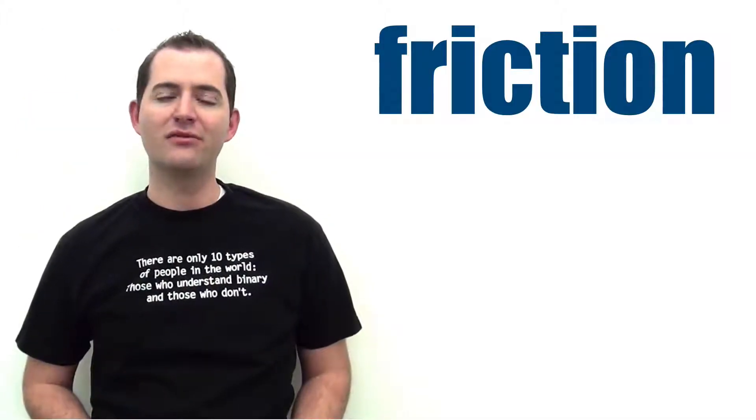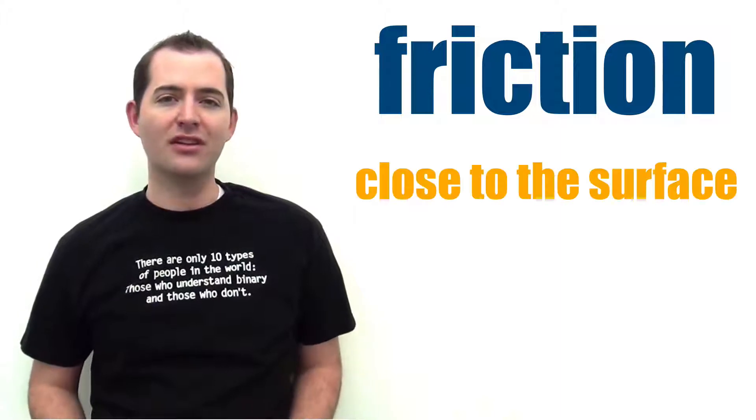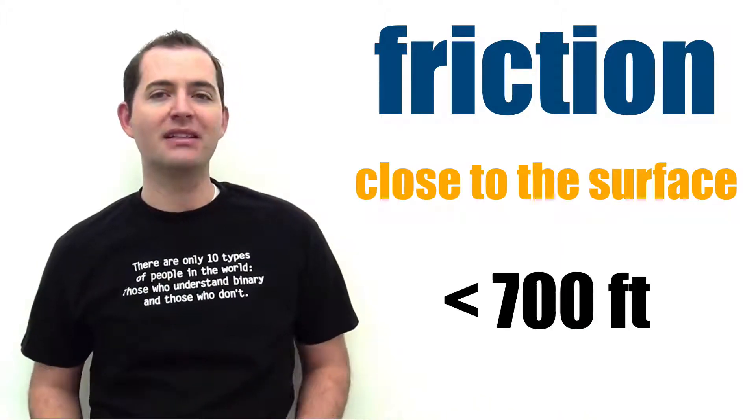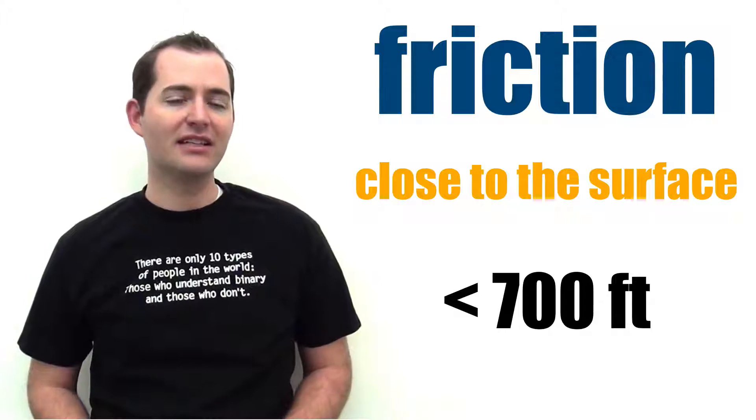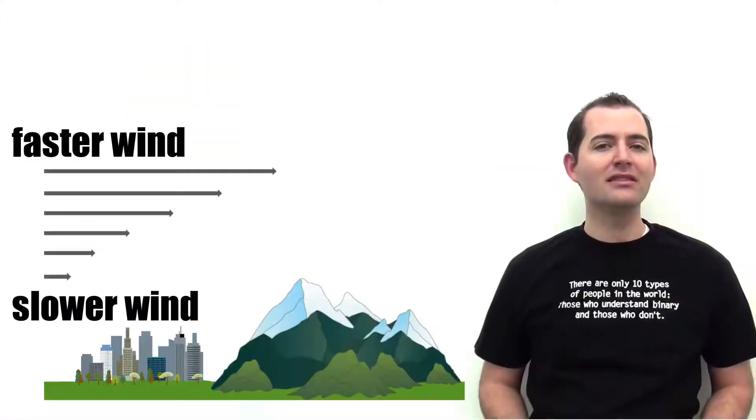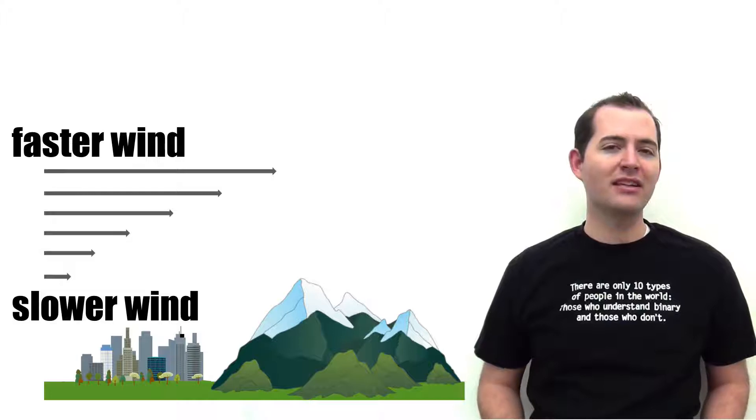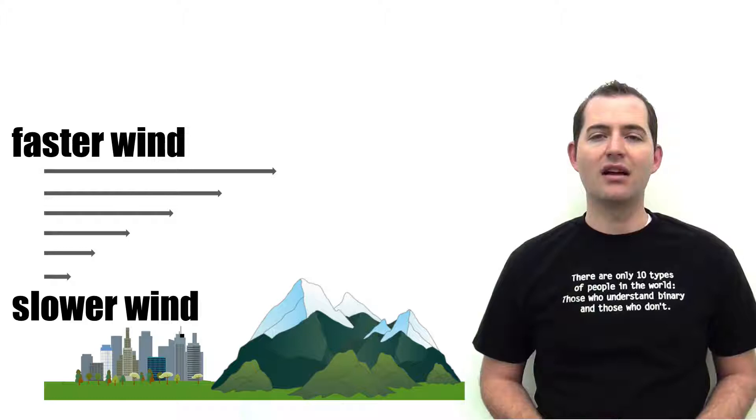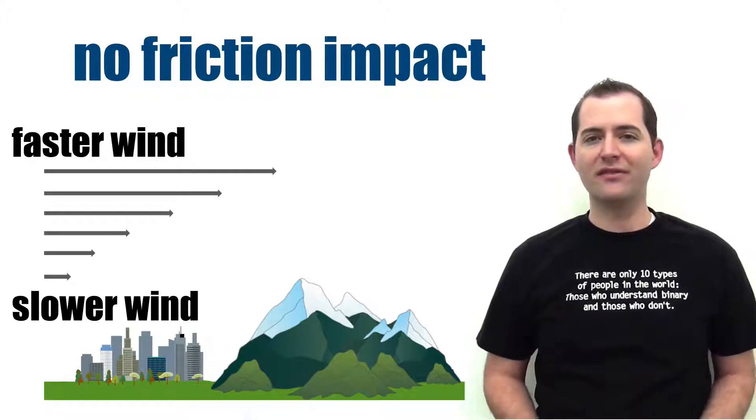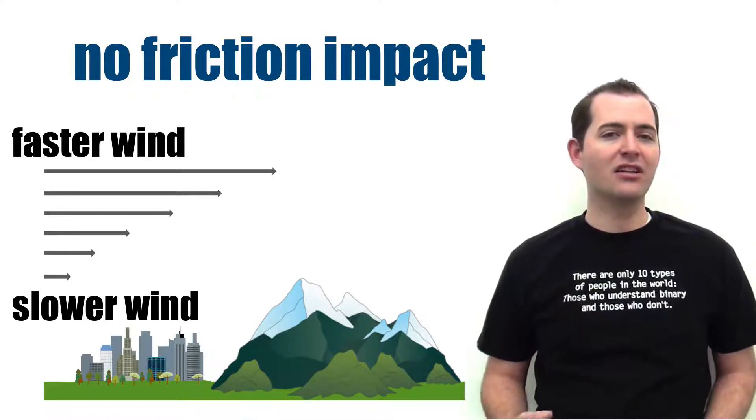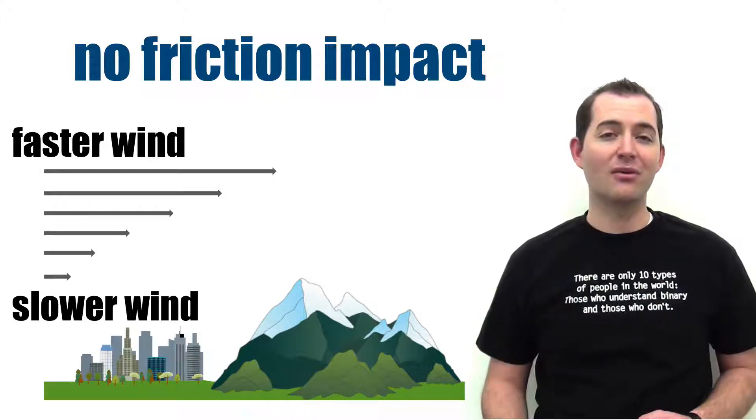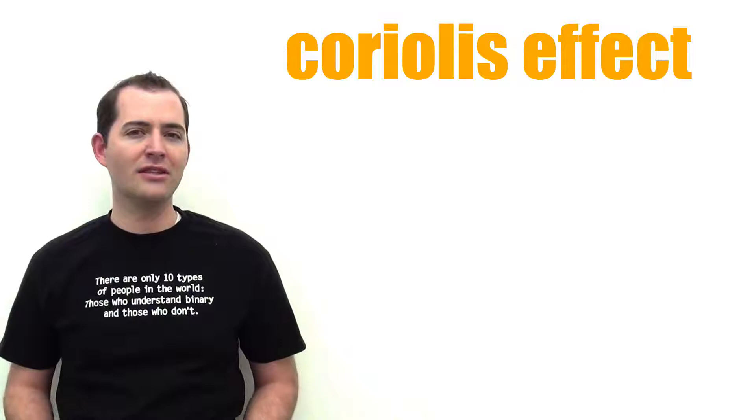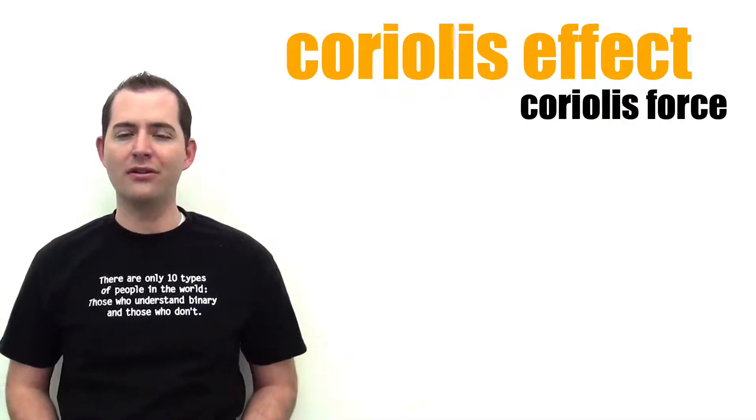Friction only influences wind direction when it is close to the Earth's surface, typically defined as less than 700 feet above ground. When wind is close to the ground, it is affected by the friction of objects and topography. But once we get over 700 feet above the surface, friction no longer has a measurable impact. The other major factor that impacts wind direction is known as the Coriolis effect or Coriolis force.